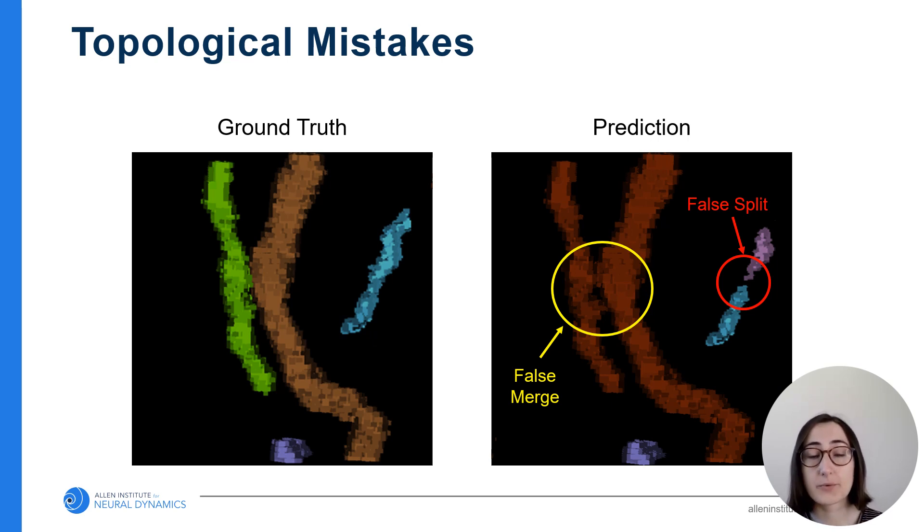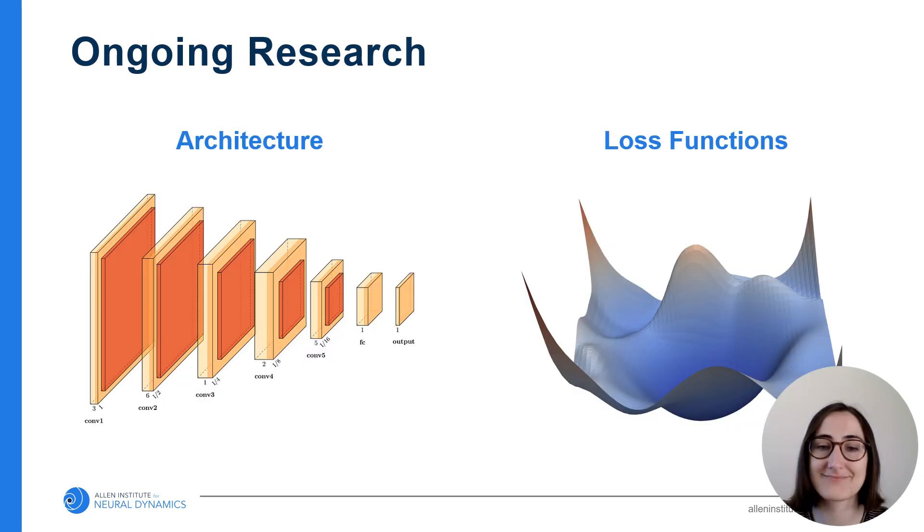One project we're working on is to build robust neural networks that can perform neuron segmentation and avoid making these topological mistakes. The quality of results generated by the neural network is closely tied to the architecture and the loss function used to train it, and these are two avenues of research we've been actively exploring.